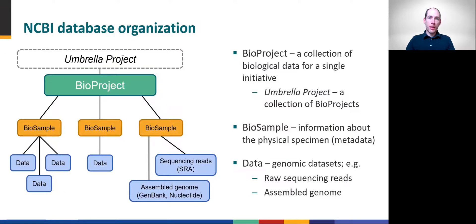Now let's turn to NCBI, which houses a breadth of resources for biomedical and other scientific disciplines. This module will only highlight a few features regarding storage of microbial pathogen sequence data, including for SARS-CoV-2, which are organized in the simplified database hierarchy illustrated by this schematic. Note the three main layers to this organization. At the top, bioproject records describe research projects or study goals and usually something about the included data types or sample scope.